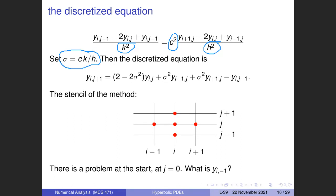Every discretization method for partial differential equations has a picture called the stencil. The stencil shows all the points that appear in the equation. The central point is (I, J), and we compute the next point at J+1 from three points at the current time level J and one point from J-1 — the values of today and yesterday.